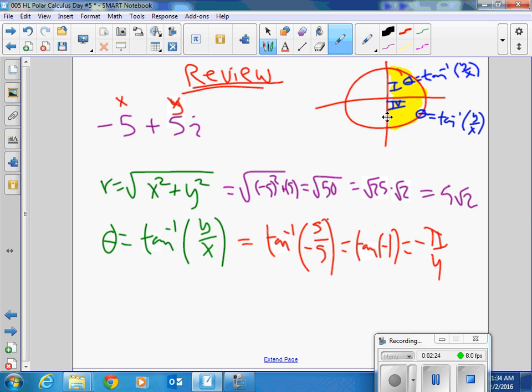But sometimes if you plot like this one, negative 5, 5, we're right here, aren't we? This is where we want to be. But if I do this, I am going to get negative pi over 4. So what do we do to get you back up here? What are we going to do? Add pi. So that's the big takeaway from yesterday.